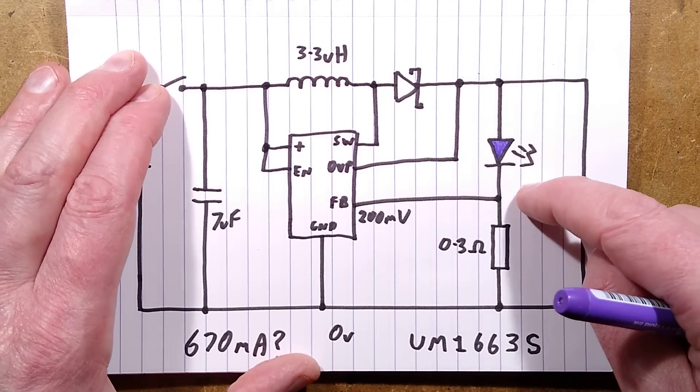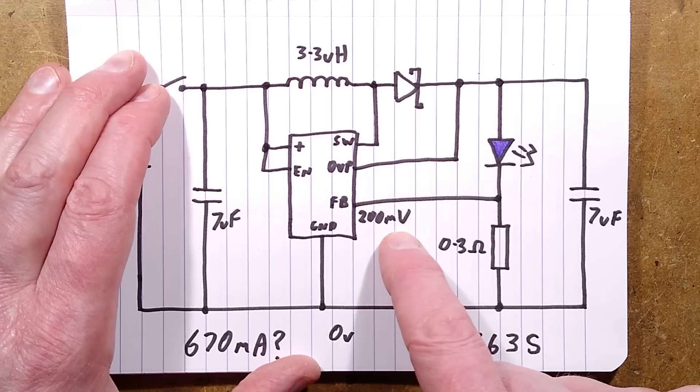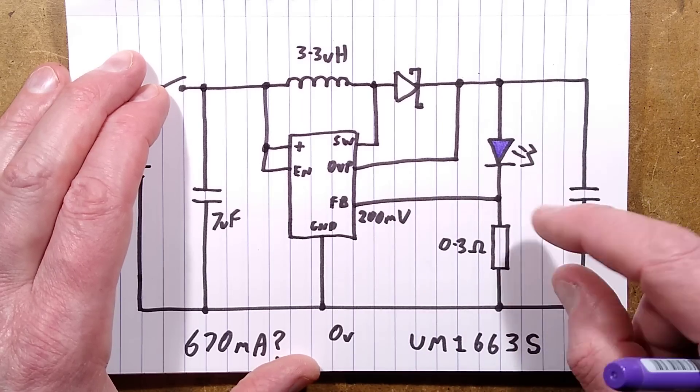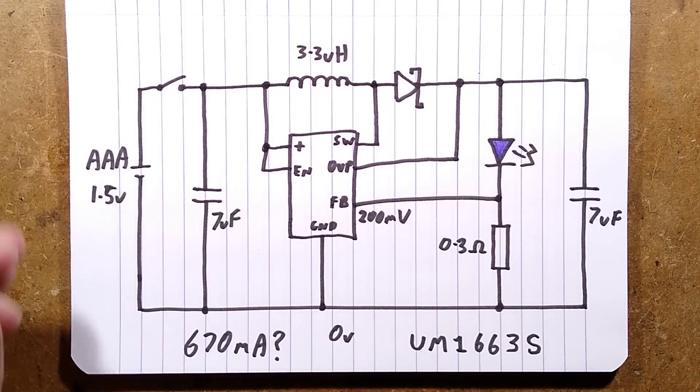There is the ultraviolet LED, there is the current sense resistor, and there's the feedback input with a 200 millivolt threshold. As the current increases through this LED and the resistor, the voltage across the resistor rises. And if we get the calculator in here, we can see that I equals V over R.